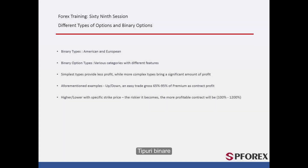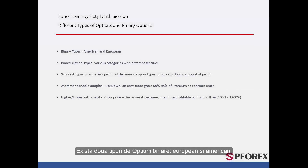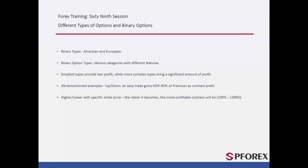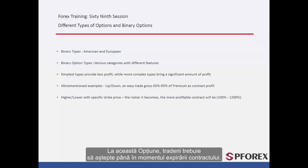There are two types of binary option: European and American. In the European option, traders have to wait until the expiration time of the contract. The contract can be implemented only if the expiration time has been reached.